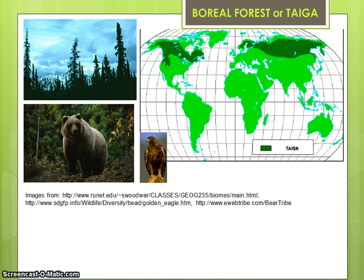Conifer forests are primarily found in a broad circumpolar belt across the northern hemisphere and on the mountain ranges. Low temperatures limit the growing season to a few months each year, and the canopy is dominated by needle-leaf evergreen trees. The variable composition and structure of these forests reflect the wide range of climatic conditions in which they grow. The boreal forest is the largest vegetation formation on Earth. During periods of drought, fire can affect a large portion of the boreal forest, but boreal species of broadleaf trees and conifers are well adapted to fire, and fire is a source of regeneration.